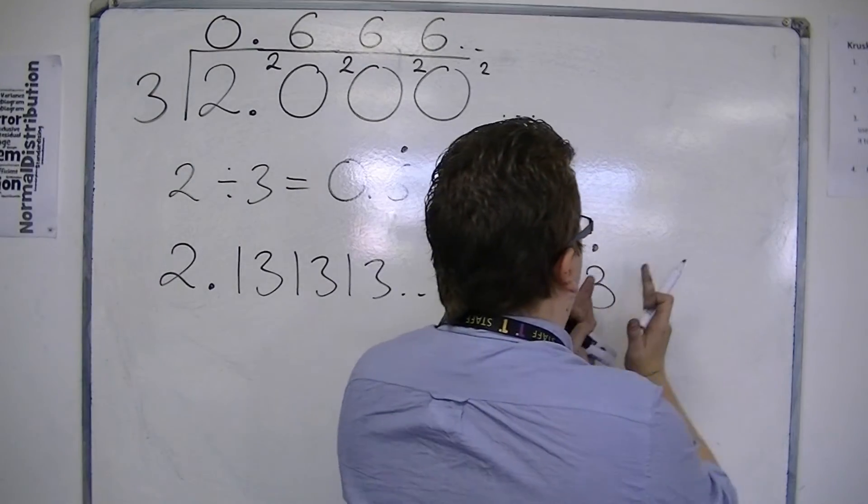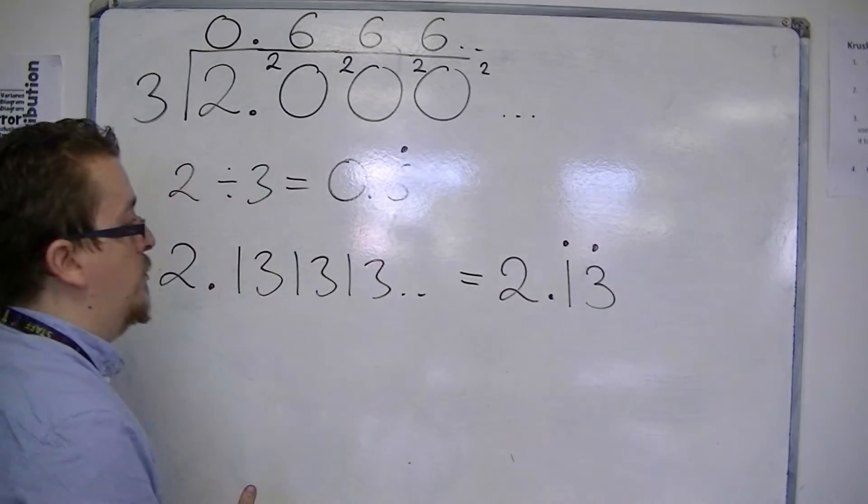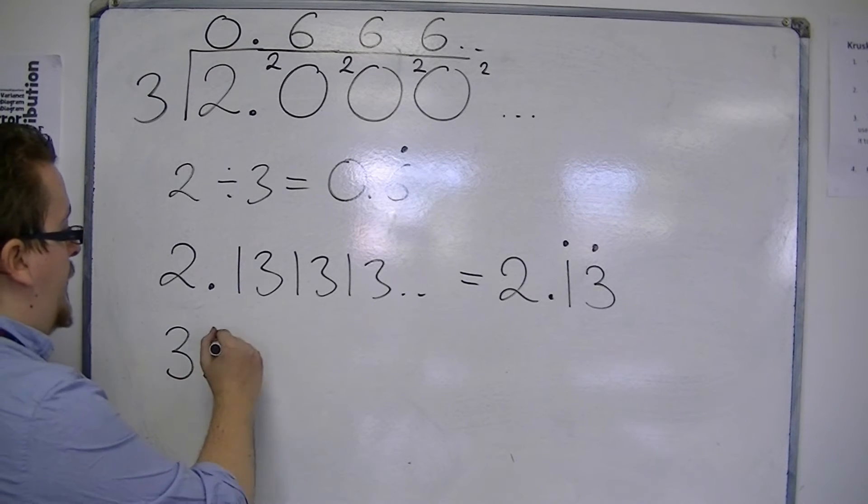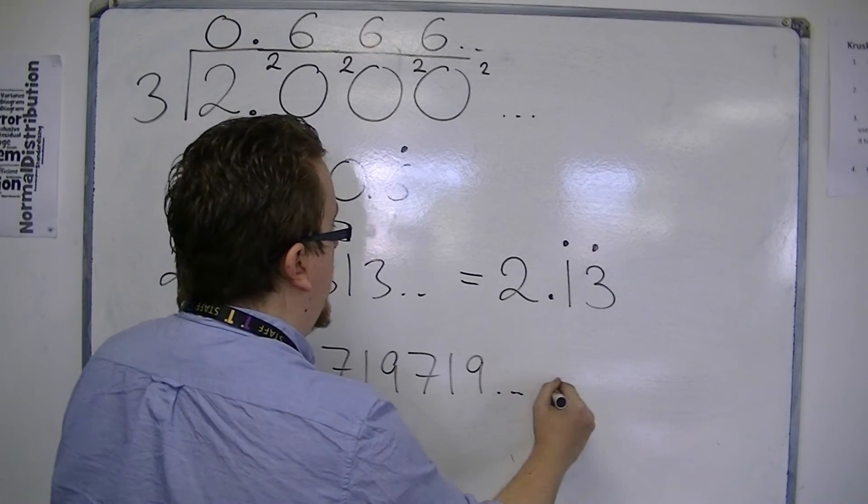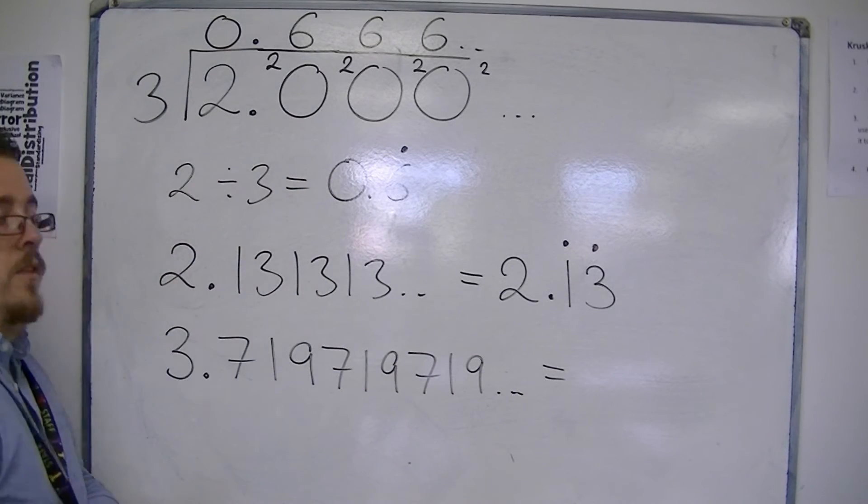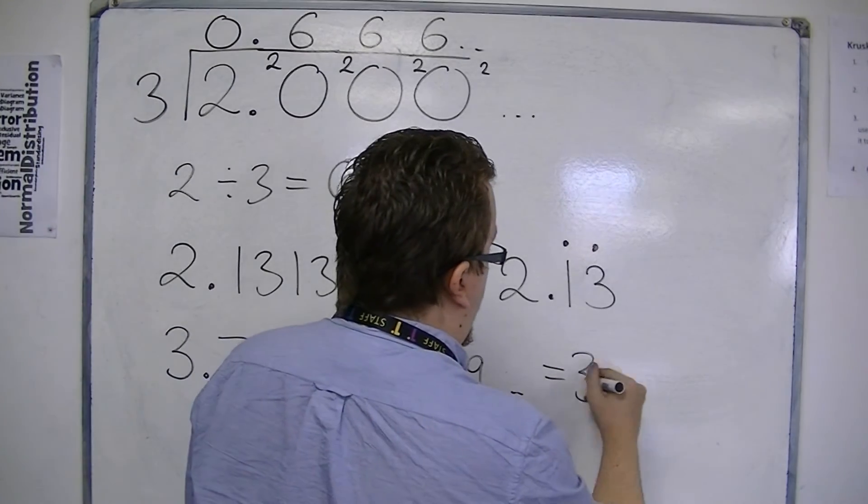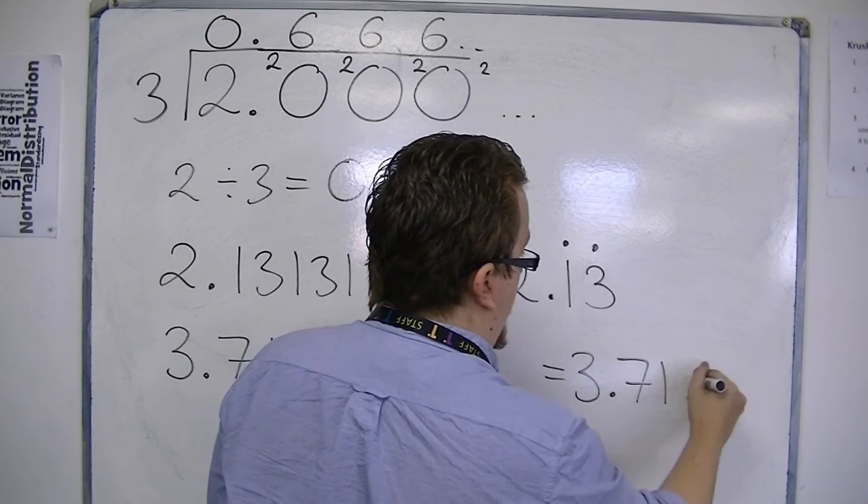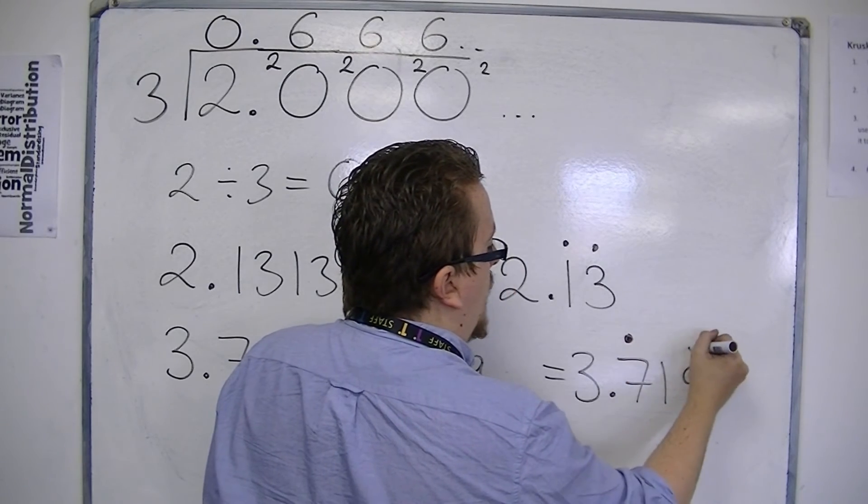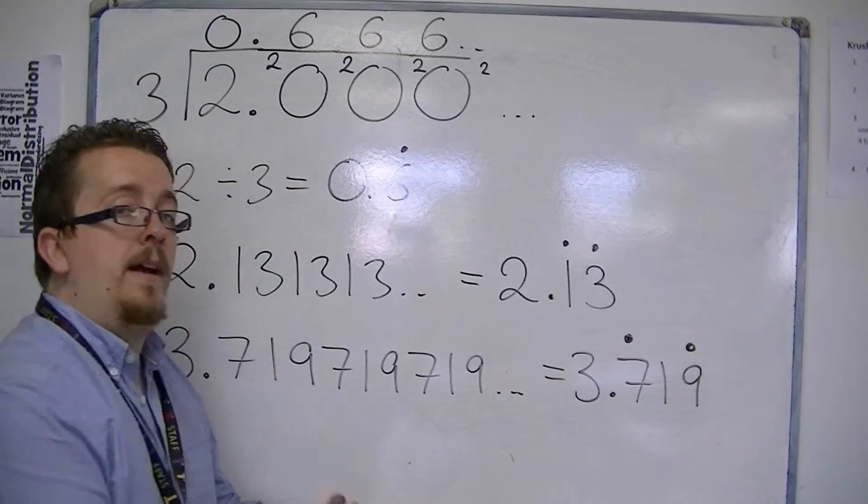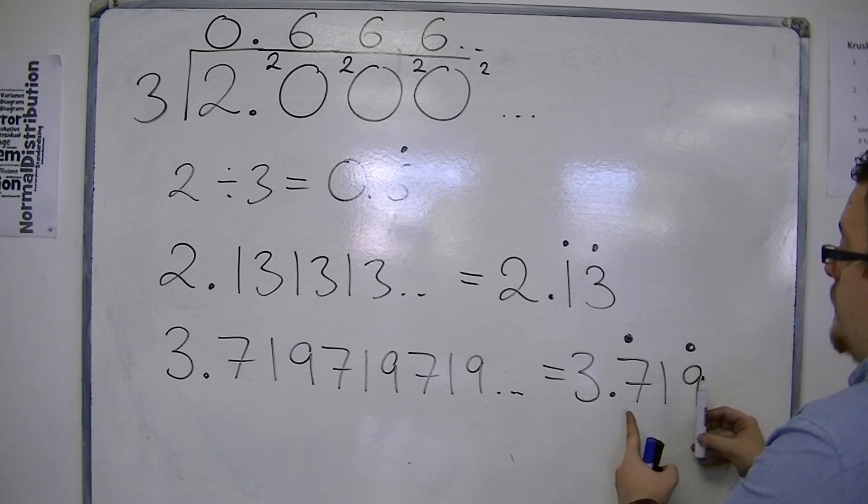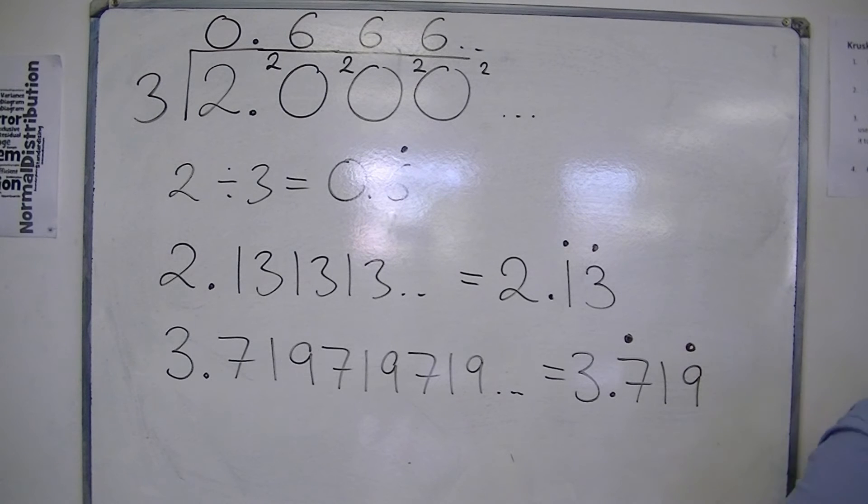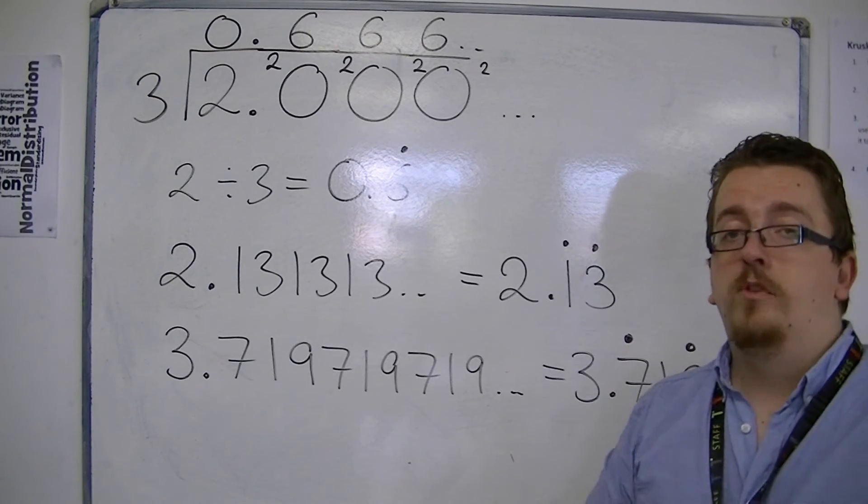That's what's repeating, so we do 1-3, 1-3, 1-3, etc. If we had 3.719, 719, 719, etc., then we can write that as 3.719. And we put one dot over the first number and the last number. So it tells us that it's the 719 that is repeating each time. So this is how we write recurring decimals.